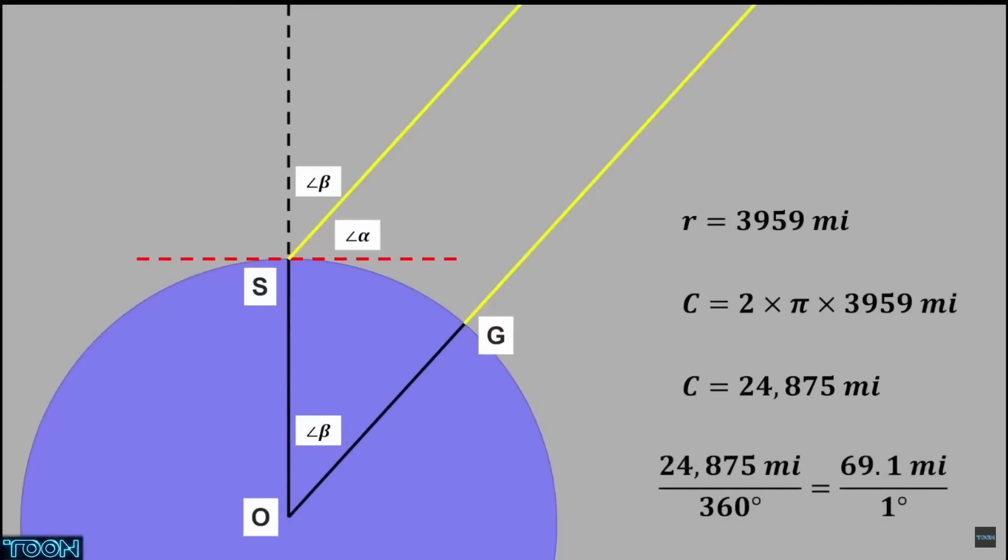And 24,875 miles circumference on a 360 degree circle is 69.1 miles per degree. And this linear relationship between the angle and the distance from the GP is derived from the Earth being a globe and only if the stars are very far away.